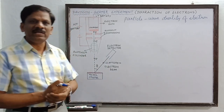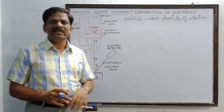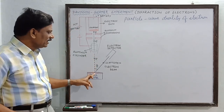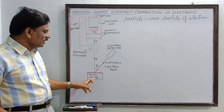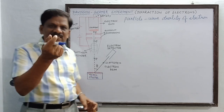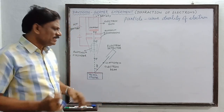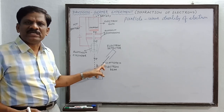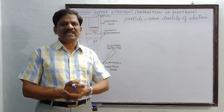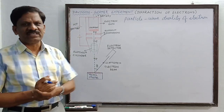According to de Broglie, these accelerated electrons behave like waves — they are called electron waves. When these electron waves are incident on the nickel crystal, the space between any two atoms acts like a slit for the electron waves. As a result, they undergo diffraction. These diffracted waves traveling in a particular direction then undergo constructive and destructive interference, forming a diffraction pattern.